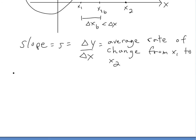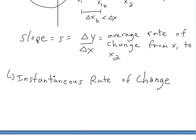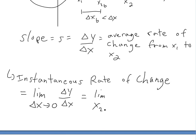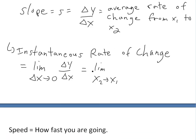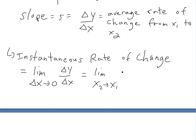Now if you write this out: the instantaneous rate of change equals the limit as delta x approaches zero of delta y over delta x. This is also the limit as x2 approaches x1, because x2 is getting closer and closer to x1. So we have the limit of y2 minus y1 over x2 minus x1.